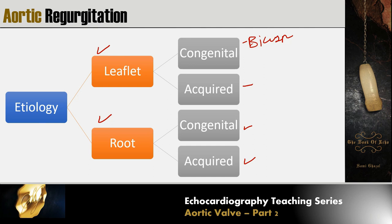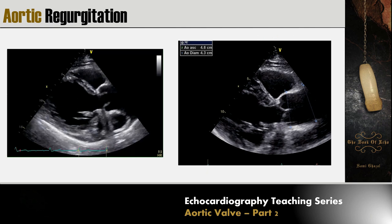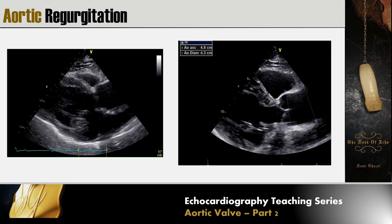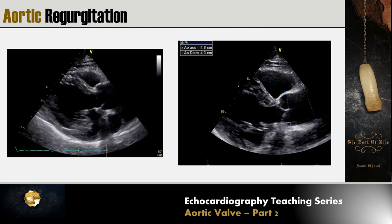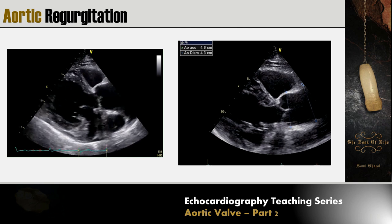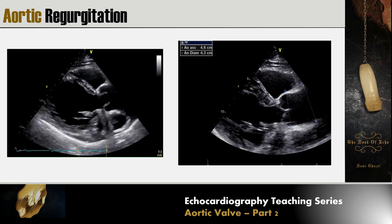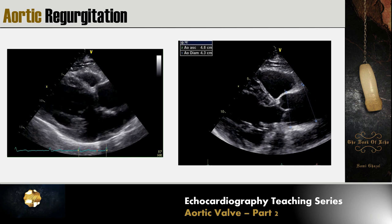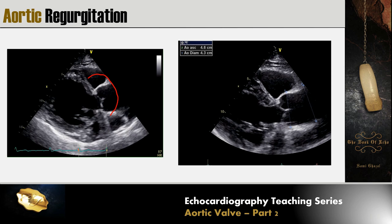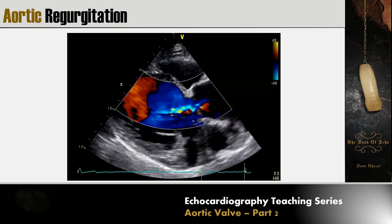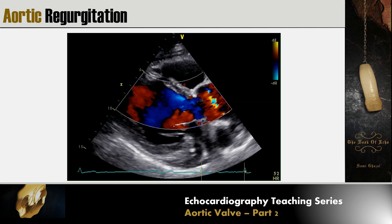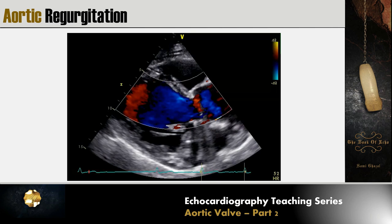Knowing the mechanism of aortic regurgitation is very important, particularly in the decision for repair versus replacement. If we have simple aortic dilatation causing aortic regurgitation, repair is preferred compared to leaflet abnormalities where repair is usually not possible. In a dilated aortic root, we will find normal leaflet motion, and the jet direction is central, indicating that the mechanism is dilatation.